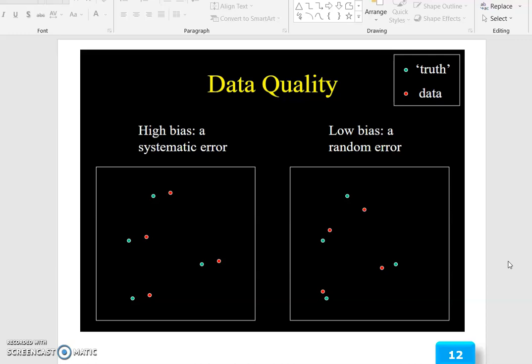Data quality truth data: high bias is a systematic error, low bias is a random error. This shows the relationship between truth and data.